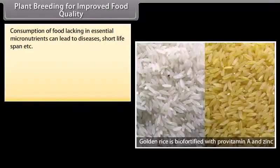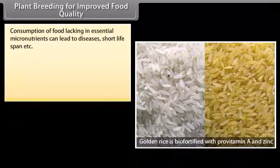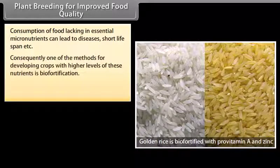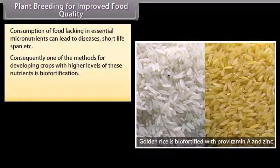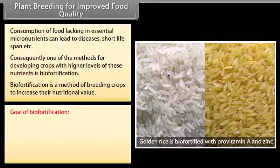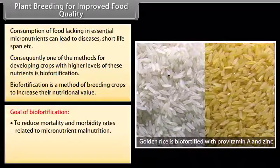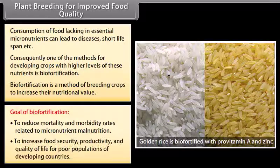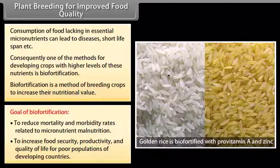Plant breeding for improved food quality. Consumption of food lacking in essential micronutrients can lead to diseases and short lifespan. One method for developing crops with higher levels of nutrients is biofortification. Biofortification is a method of breeding crops to increase their nutritional value. The goal of biofortification is to reduce mortality and morbidity rates related to micronutrient malnutrition, and to increase food security, productivity and quality of life for poor populations in developing countries.